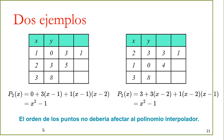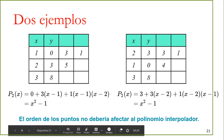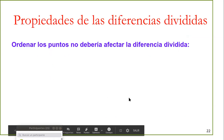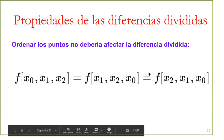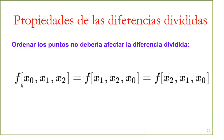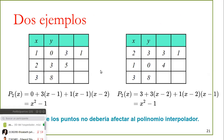Ya hablamos del teorema de existencia y unicidad que nos dice que existe solo uno y no importa el orden en el que tengamos los puntos, siempre deberíamos llegar a ese mismo polinomio. Propiedades de las diferencias: f[x0,x1,x2] = f[x1,x2,x0] = f[x2,x1,x0]. O sea, no importa el orden, las diferencias son exactamente iguales. Acá tenemos f[x0,x1,x2] y acá f[x1,x0,x2] en diferente orden, pero el valor es el mismo.